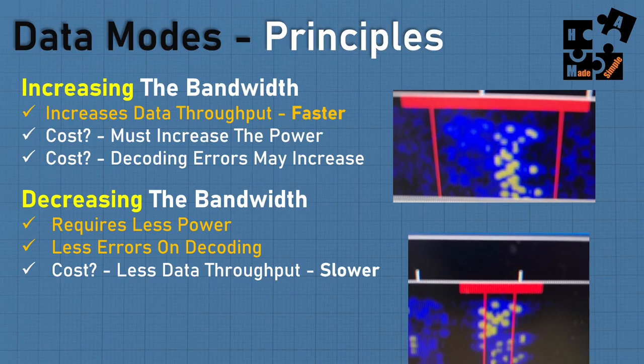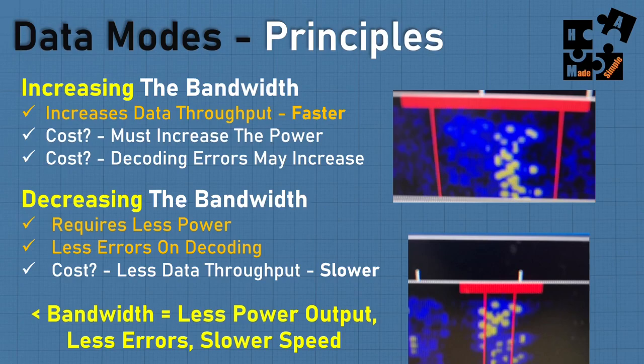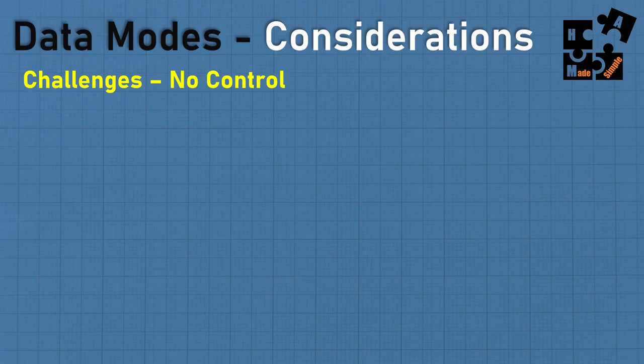Basically, less bandwidth equals less power output, fewer errors, and slower speed. Can you live with slower? Or can you go faster because propagation conditions are good? That's the first principle — the principle of bandwidth. Now, considerations: there are things you have no control over, such as propagation conditions, external noise, fading, and drifting. Those are pressed upon you. Based on that information, you'll have to make a choice on which digital mode works best for that particular challenge.